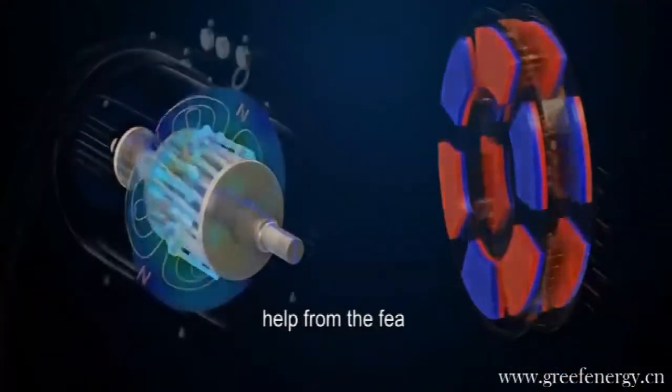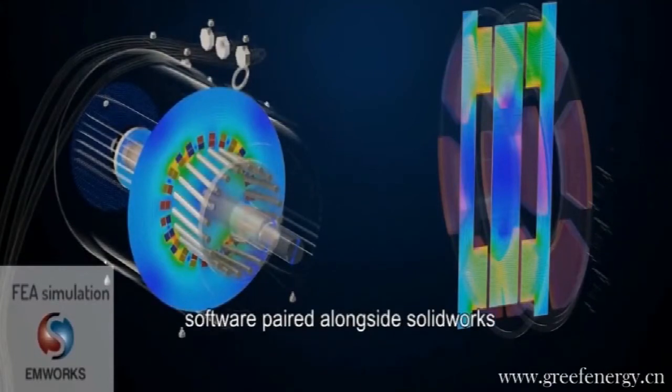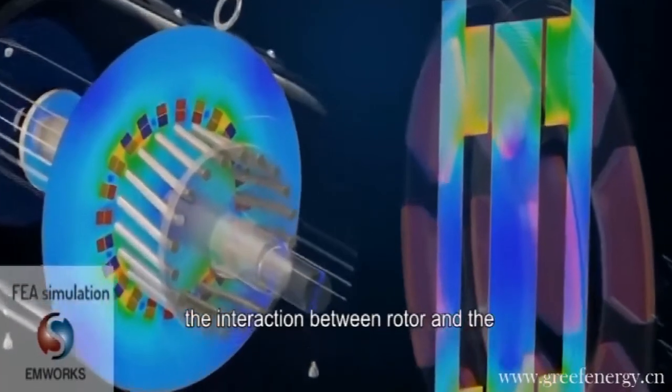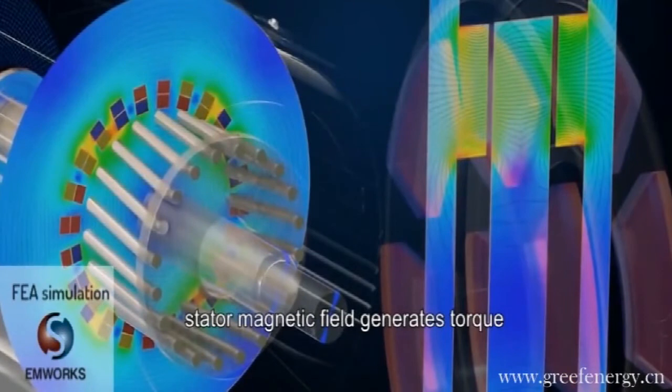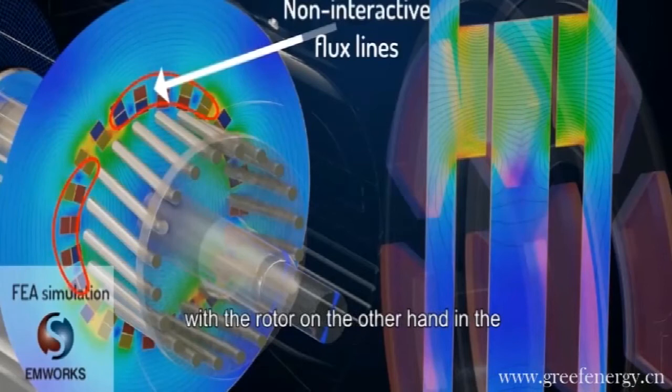To confirm the flux paths, let's take help from the FEA. Here is an FEA result in EMWorks 2D software paired alongside SolidWorks. The interaction between rotor and the stator magnetic field generates torque. Here, some field loops rarely interact with the rotor.